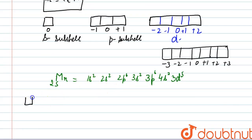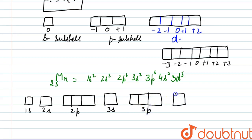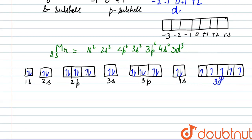We will draw the orbital diagram for Mn: 1s, then 2s, then 2p, then 3s, then 3p, then 4s, and finally 3d. We fill the electrons — 1s contains 2 electrons of opposite spin, and 3d will have 5 half-filled electrons.